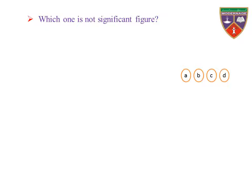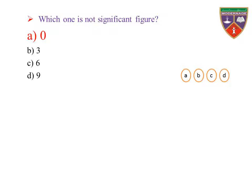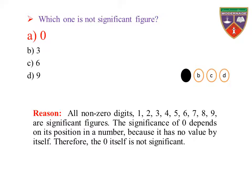Which one is not a significant figure? A: 0, B: 3, C: 6, D: 9. The key is 0, therefore the correct option is A. Reason: all non-zero digits 1 through 9 are significant figures. The significance of 0 depends on its position in a number because it has no value by itself. Therefore, 0 itself is not significant. Hence, 0 is not a significant figure.